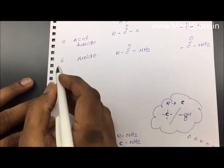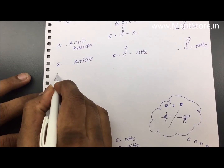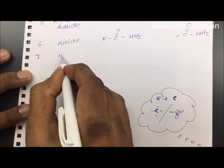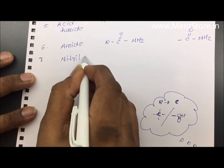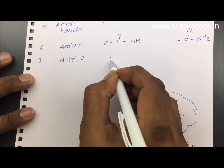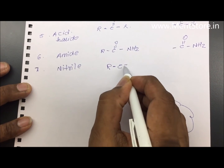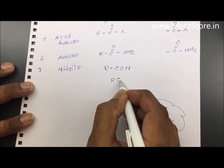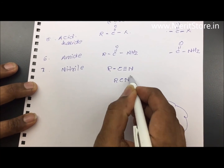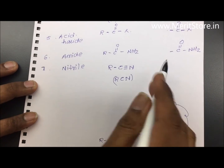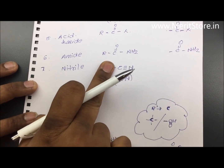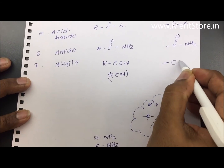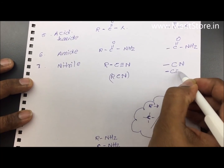The last one under this category is nitrile — written as R-C≡N. You tell me what the functional group is: you cut away the R, and the functional group is -C≡N.